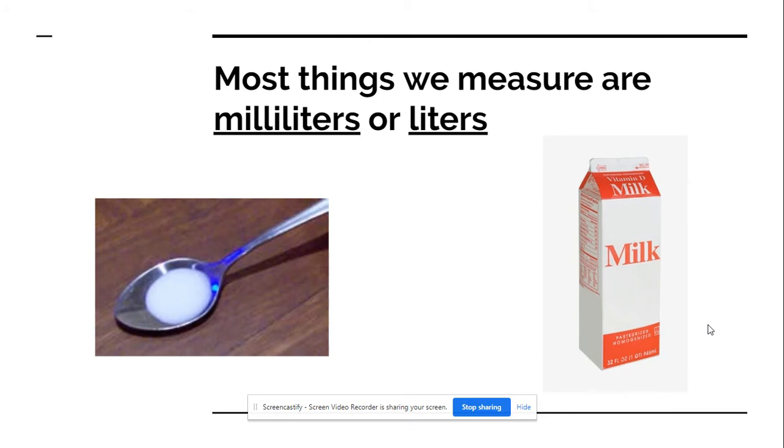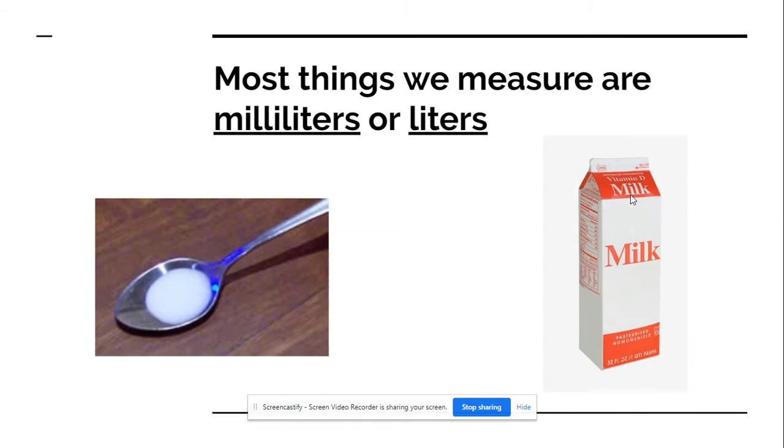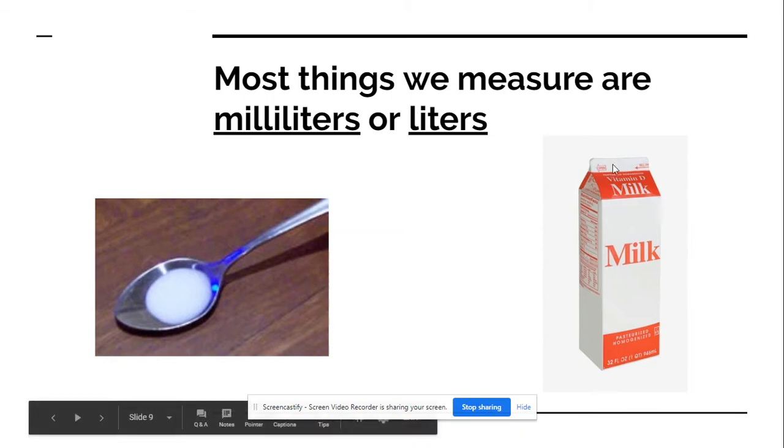So just real world, the two that we use the most are milliliters or liters. So a milliliter is a small amount of liquid here on the spoon. It's really small. And then liters, this entire carton of milk is a liter. So it's a lot bigger.